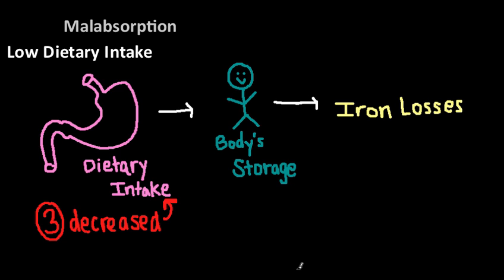Malabsorption may also be a cause of decreased intake. Iron is absorbed better in its ferrous form — the Fe2+ — which is why absorption occurs mainly in the duodenum, the first part of the small intestine. The stomach acids that empty into the duodenum aid in the absorption of iron and keep it in that ferrous form. If, for example, a patient is taking antacids or has had gastric surgery, this may alter their intake of iron.